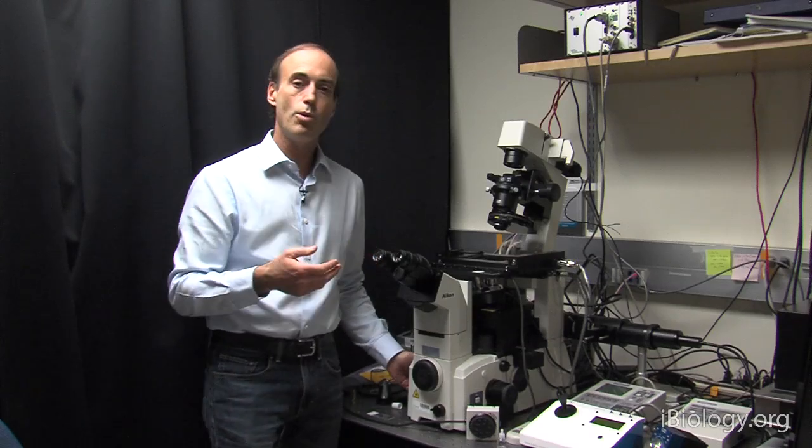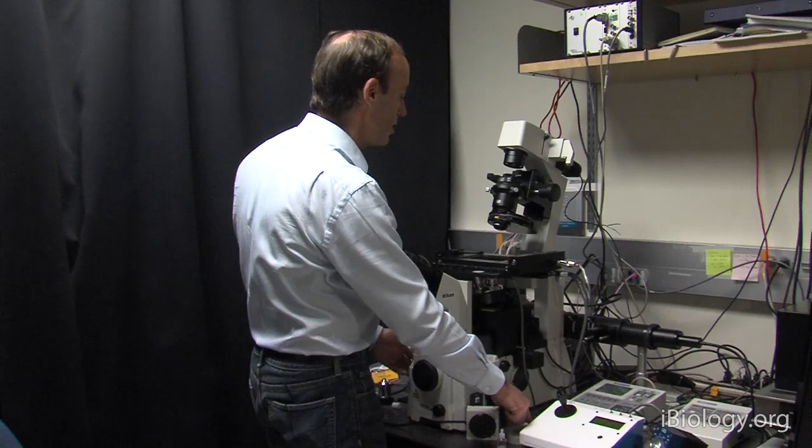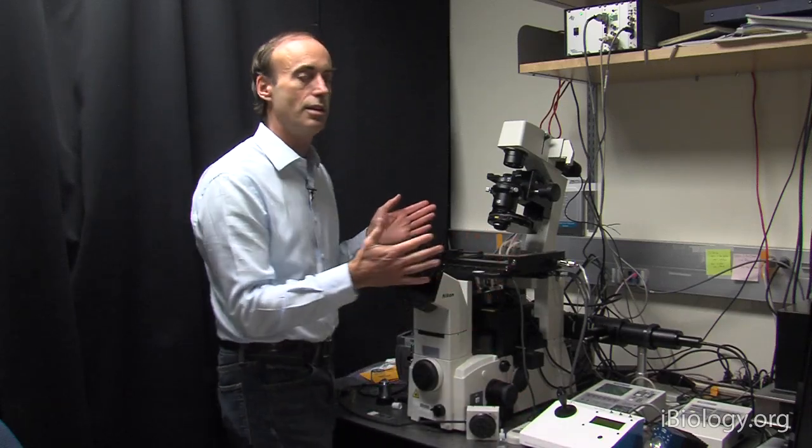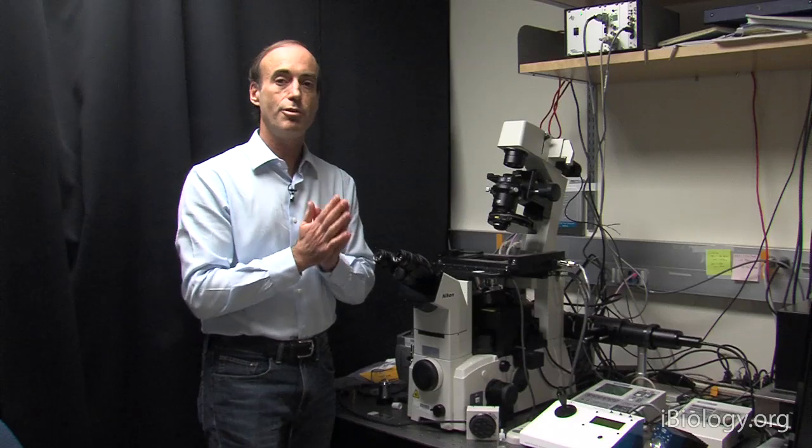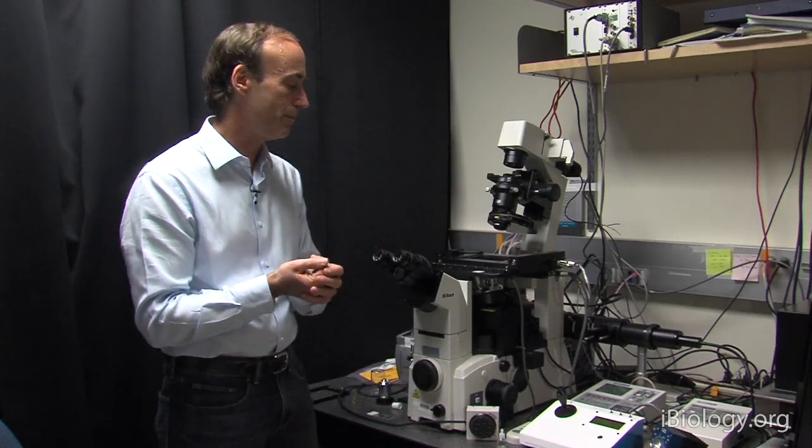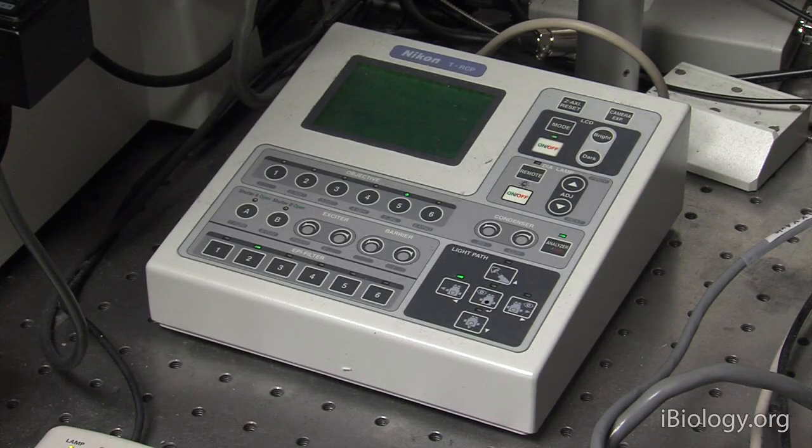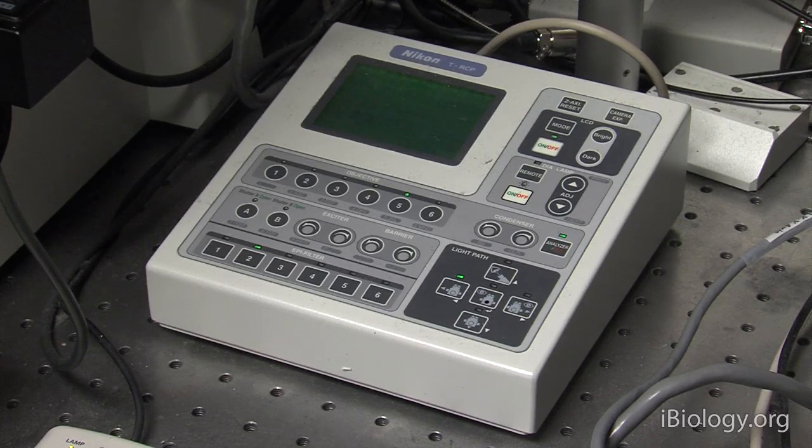Now, when I become familiar with this objective knob, I want to make sure that I have everything set up properly so that I can see the fluorescence from my specimen. Before you start focusing, you want to make sure that the light path of the microscope is set up correctly, so that the image is being projected to the eyepiece.